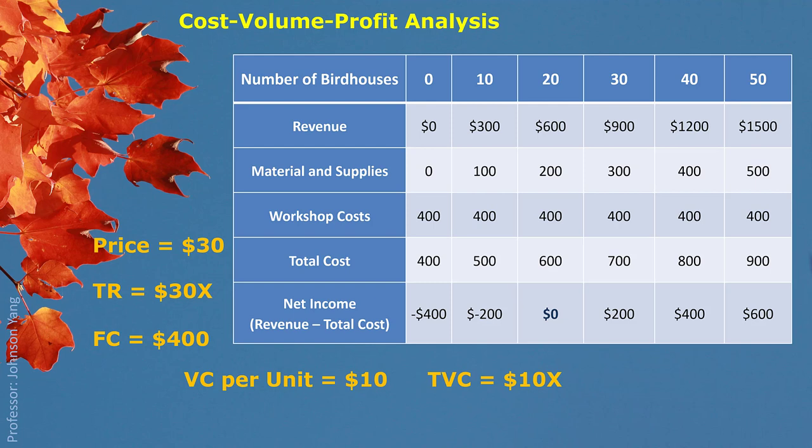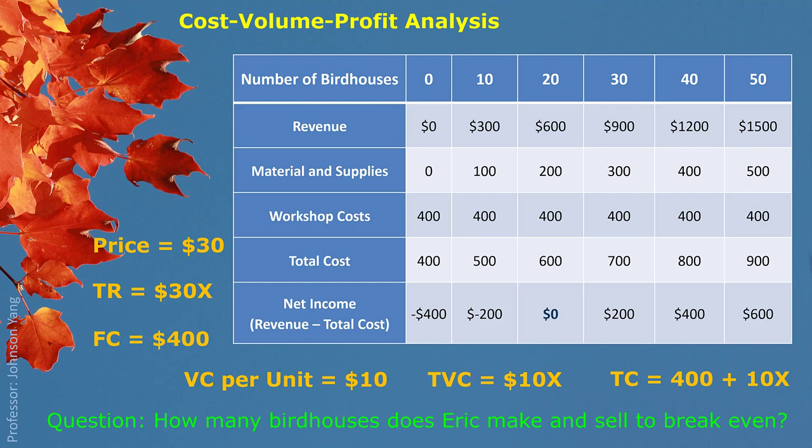We put both parts of the cost together to get the total cost: 400 + 10X. So the question for this small business is: how many birdhouses does Eric need to make and sell to break even?